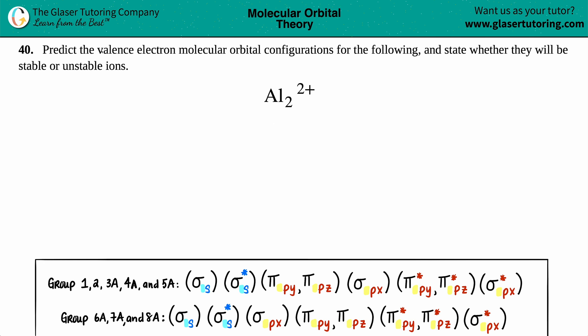Number 40. Predict the valence electron molecular orbital configurations for the following and state whether they will be stable or unstable ions. And then we have Al₂²⁺.